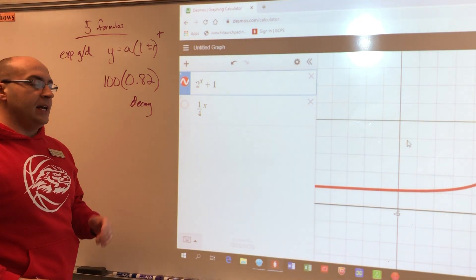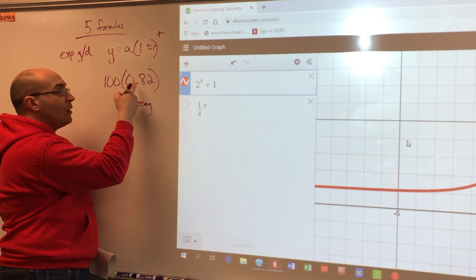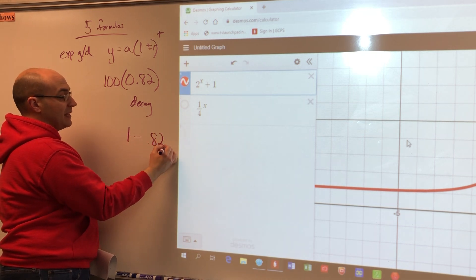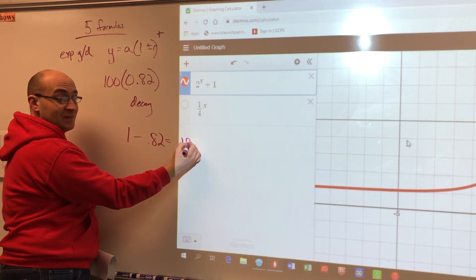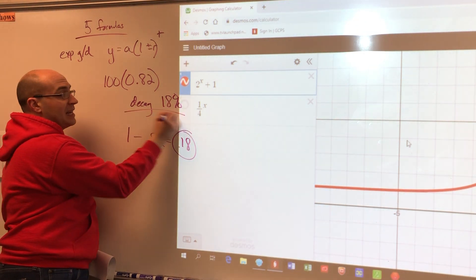So the first thing that we have to identify is this is less than one, which means that it's decay. Now, what is the rate of decay? Well, one is built into the formula. So how did I get to this? So I can just do one minus 0.82 in the calculator. I'm going to get 0.18. That's the rate of decay. It's 18%. That's how we solve that kind of stuff.